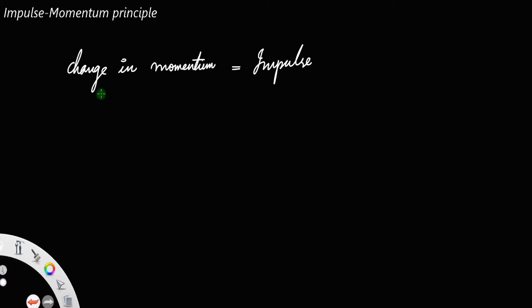How will you find the change in momentum of the body? For that, let us consider a body of mass m moving with an initial velocity of v0.